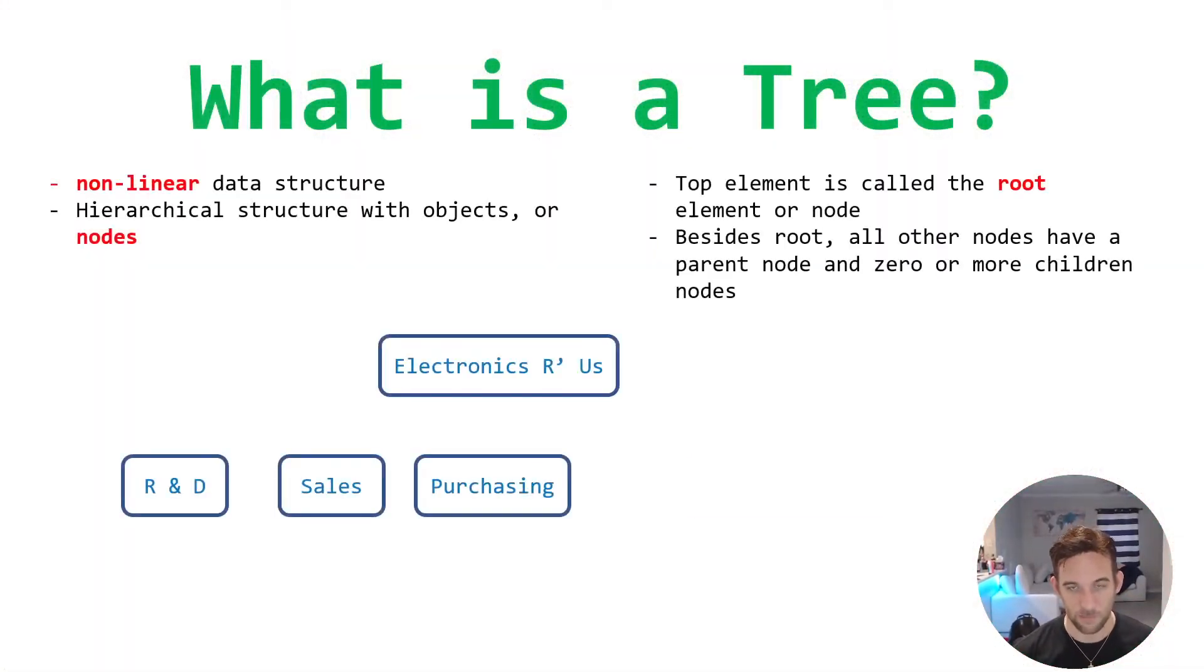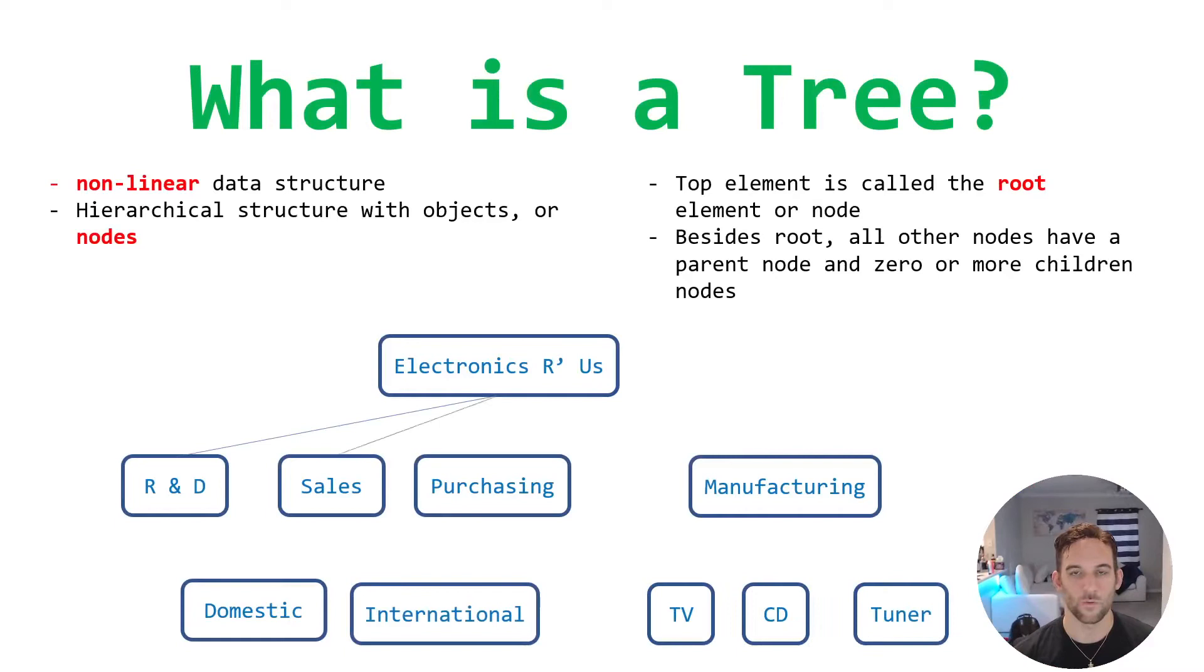So what exactly is a tree? Well, typically we think of arrays and linked lists. That's what you've probably gone over, the basics of computer science for data structures. Those are considered linear structures because there's always a before and there's an after. A tree is considered nonlinear because it also has an above and below. So this is kind of like a more natural organization of data. It looks like a hierarchical structure.